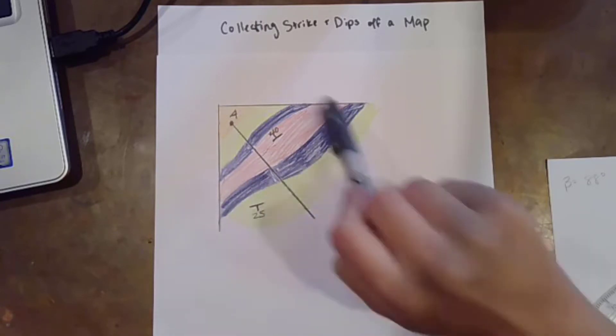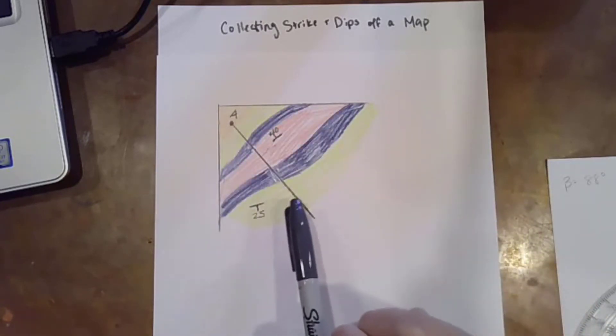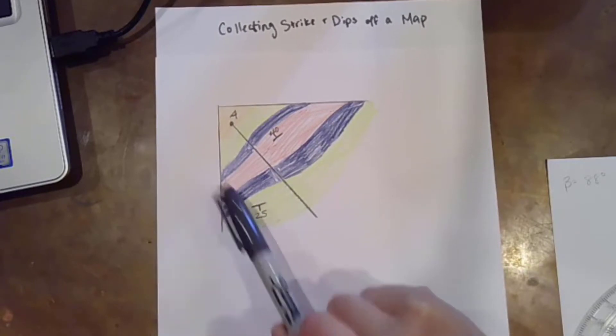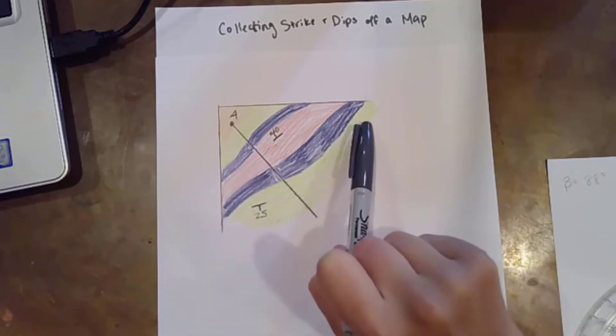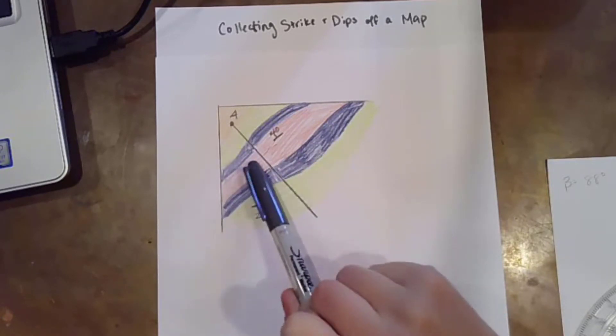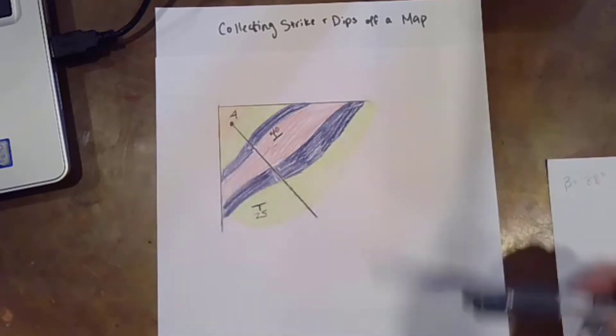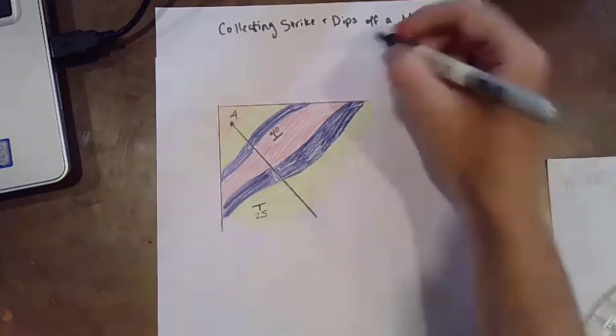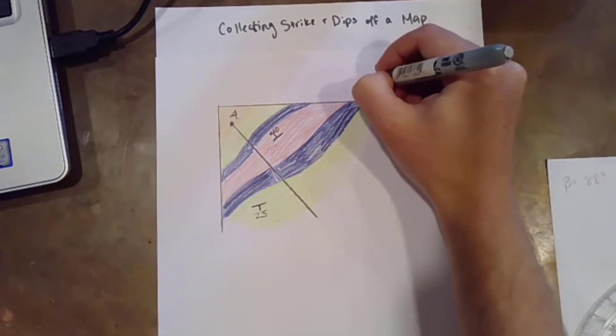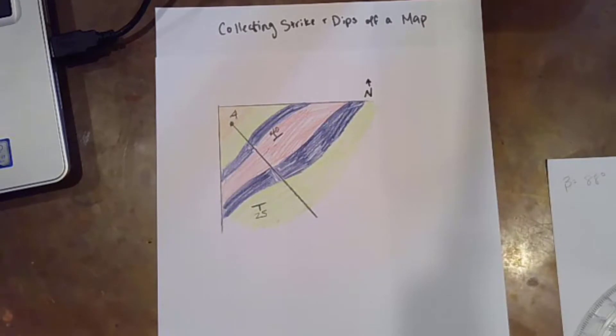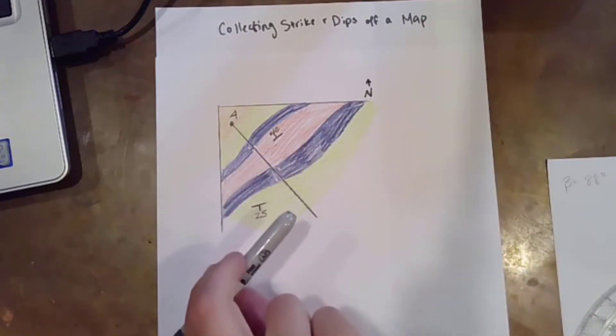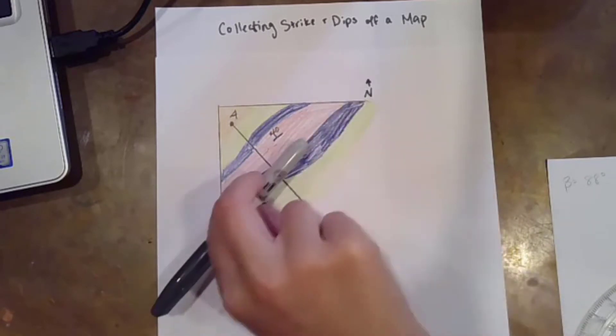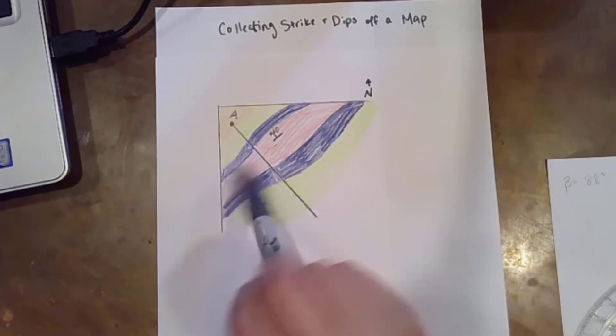So if I'm looking at something like this, if this is the pattern on my map I see a green unit, a blue unit, a red unit, a blue unit, another green unit, and I know that there's some kind of pattern there. That pattern, assuming that north is up, is kind of running or trending northeast-southwest. So I want to make a profile line that's perpendicular to that.